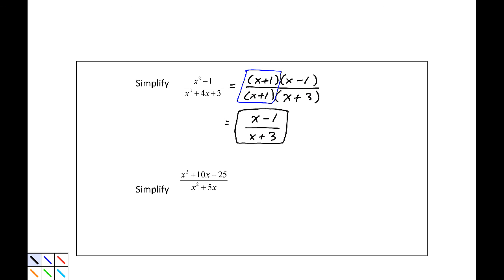Last example, we have simplify. And our numerator is x squared plus 10x plus 25 with a denominator of x squared plus 5x. The numerator, x squared plus 10x plus 25, factors as x plus 5 multiplied by x plus 5.